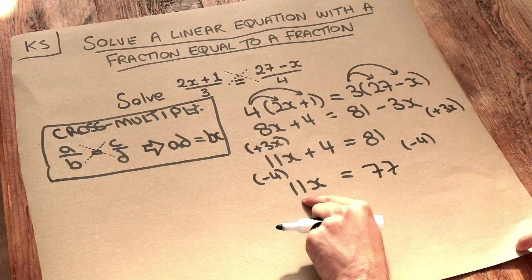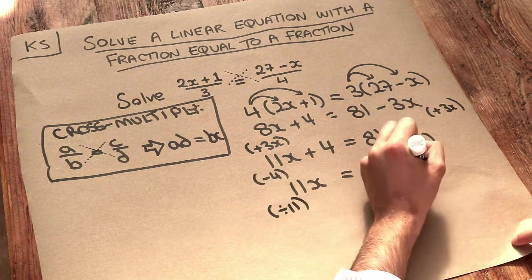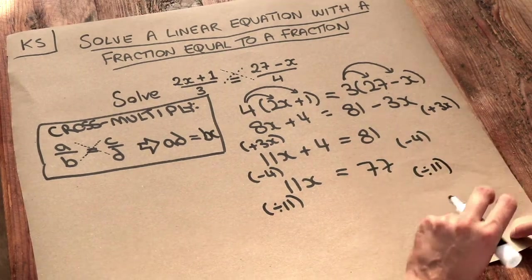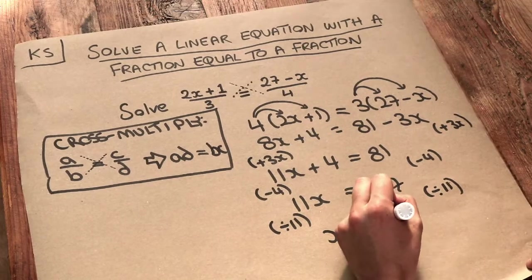We do the opposite to get rid of the multiplied by 11, so we divide both sides by 11. That gets rid of the 11, just leaving x, and 77 divided by 11 is equal to 7.